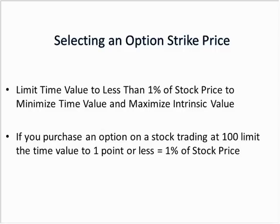The way we minimize time value and maximize intrinsic value is by using the 1% rule. If you use the 1% rule, you limit the time value portion of the option to less than 1% of the stock price. For example, if the ETF is trading at 100, you want to limit the time value portion to one point or less. It's a very simple rule but a very good way to select an option strike price.